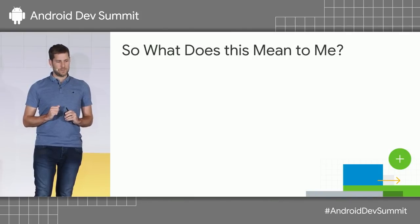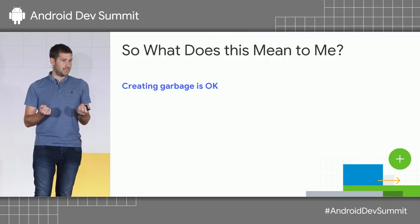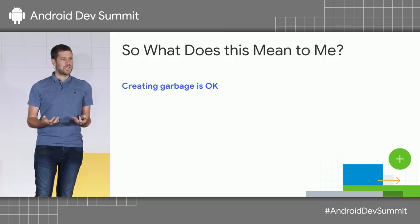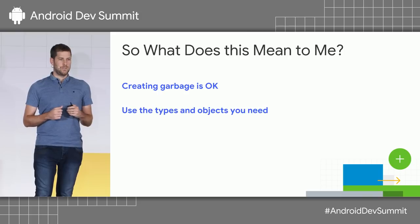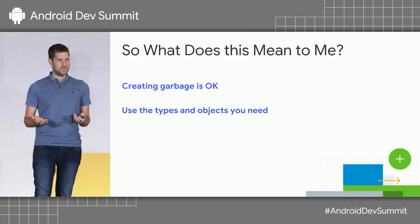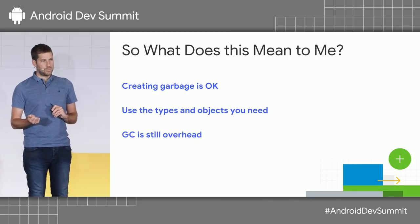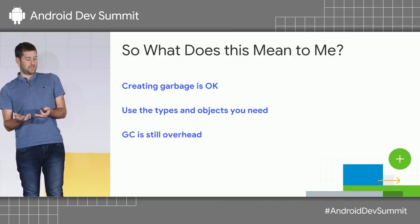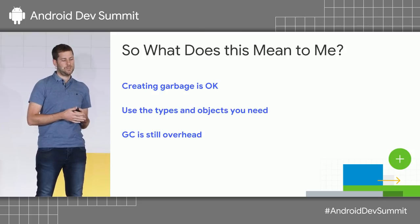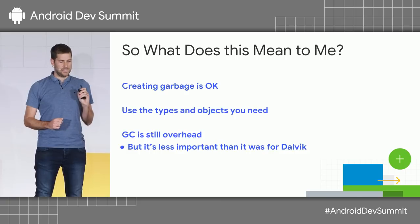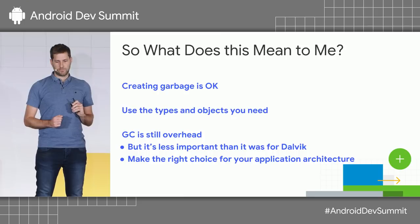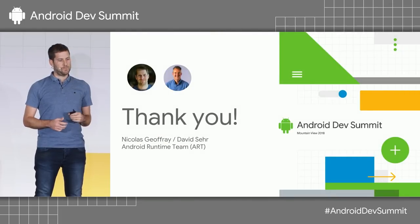This is the recommendation that Chet has, and that comes from us, so I'll give the same: creating garbage is okay today. You can use Kotlin and allocate objects you need. GC is still overhead, so be mindful that if you allocate a lot of objects, GC will need to run. But it's much less of a problem since Dalvik. Thank you.